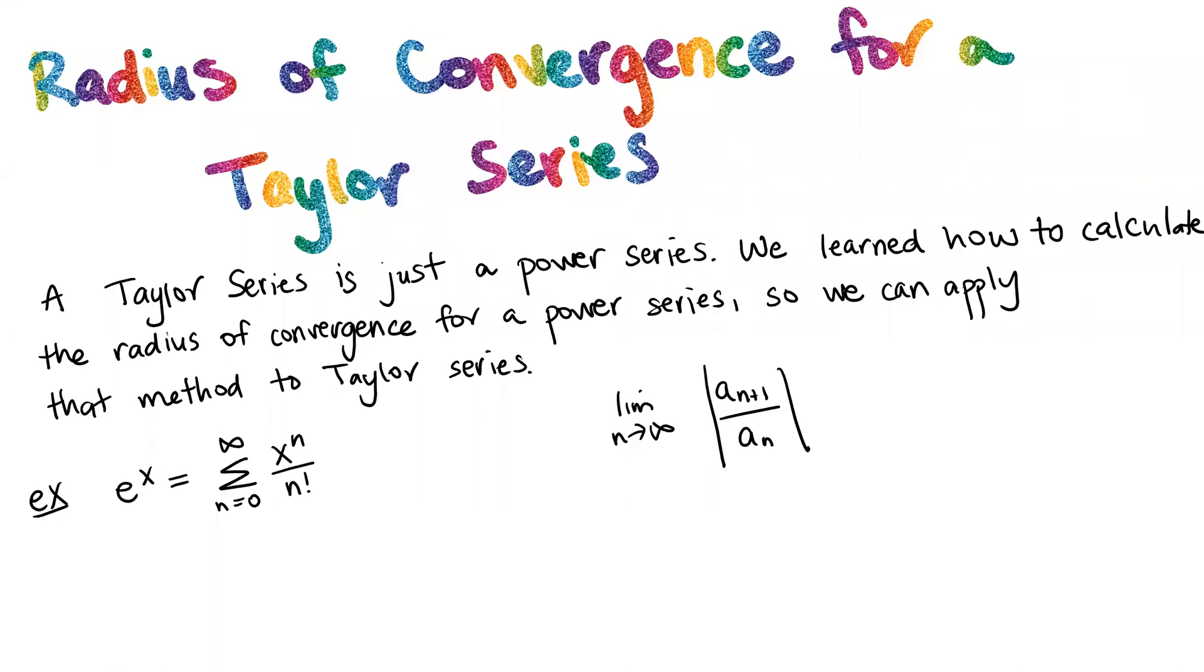In previous videos, we introduced Taylor series, which are a polynomial version of a function, and we also introduced this thing called a radius of convergence, which we can use for a power series. Now we're going to simply calculate the radius of convergence for a Taylor series.